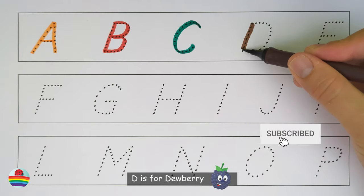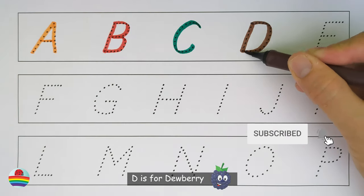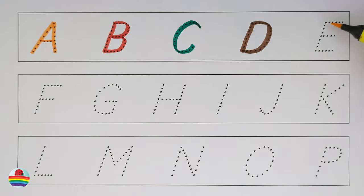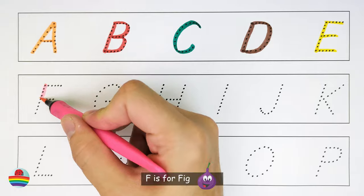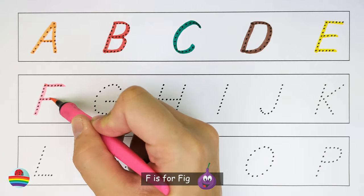D. D is for dewberry. E. E is for eggplant. F. F is for fig.